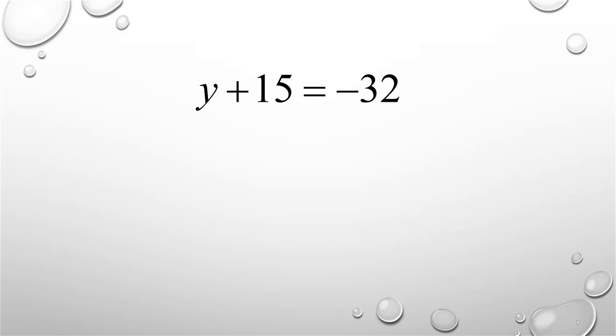Here we have y plus 15 is equal to negative 32. In order to solve for y, we're going to use the subtraction property of equality. We'll subtract 15 from both sides of the equation.